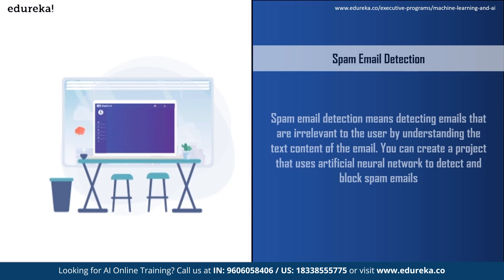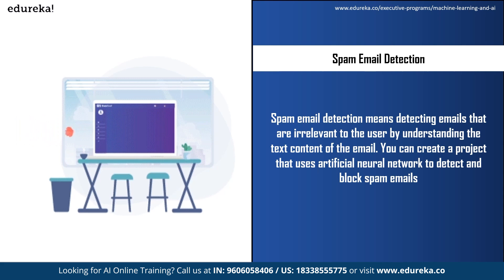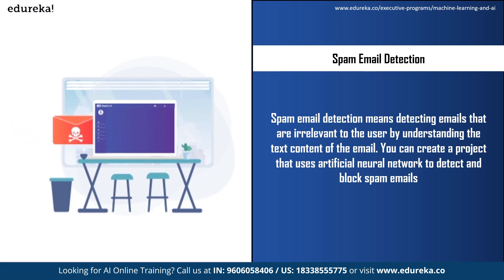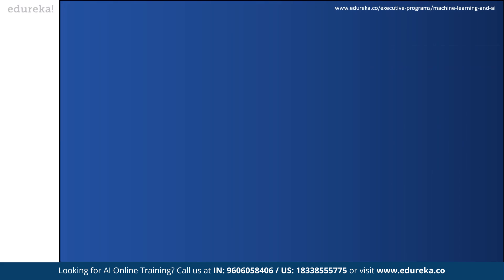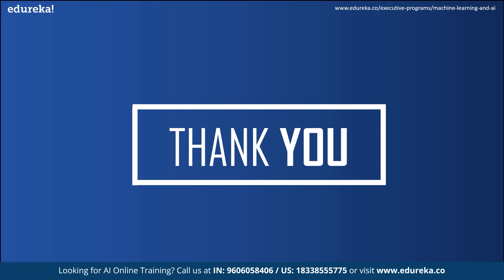The 20th AI project idea is spam email detection, which means detecting irrelevant emails by understanding their text content. You can create a project that uses artificial neural networks to detect and block spam emails, newsletters, updates, and ads. You can also enhance it so that newsletters or ads liked by one person but disliked by another are filtered based on individual user preferences using artificial intelligence.